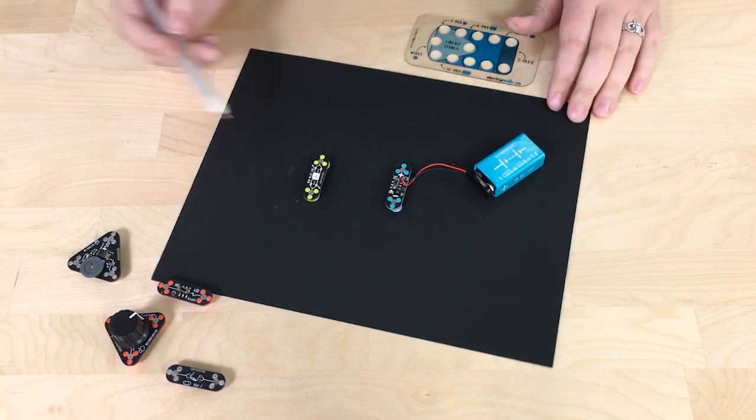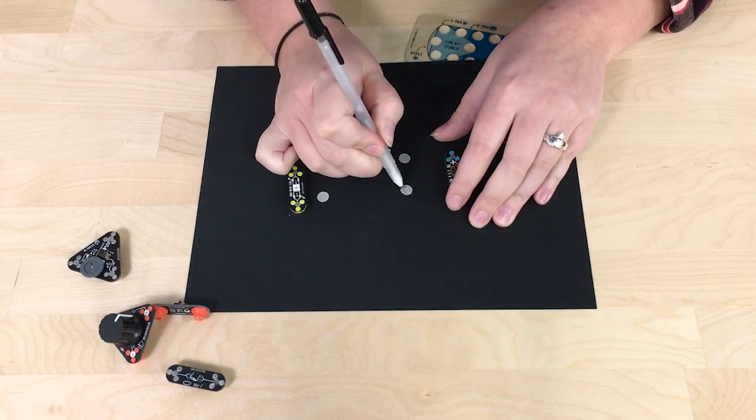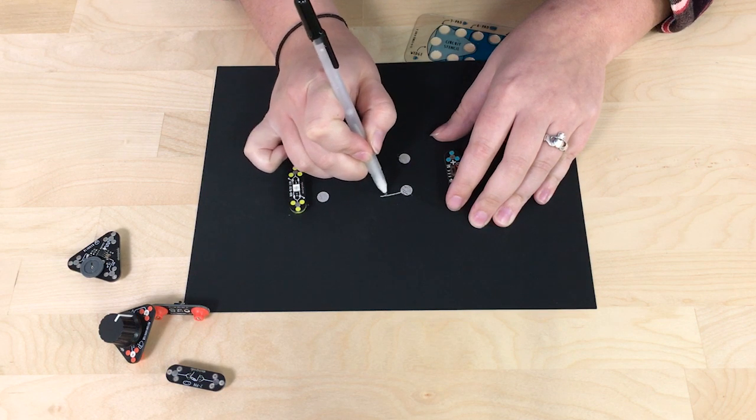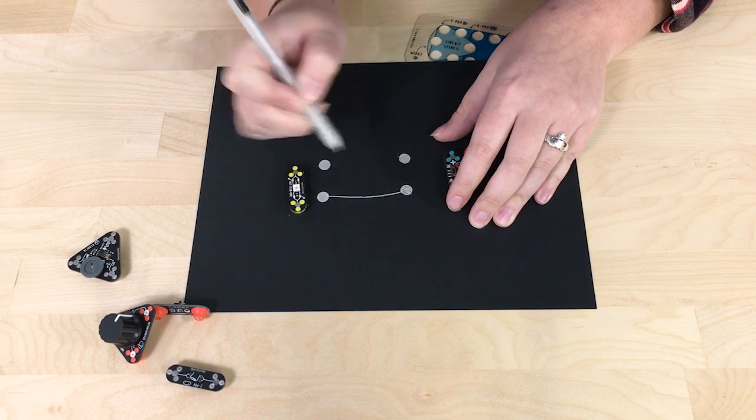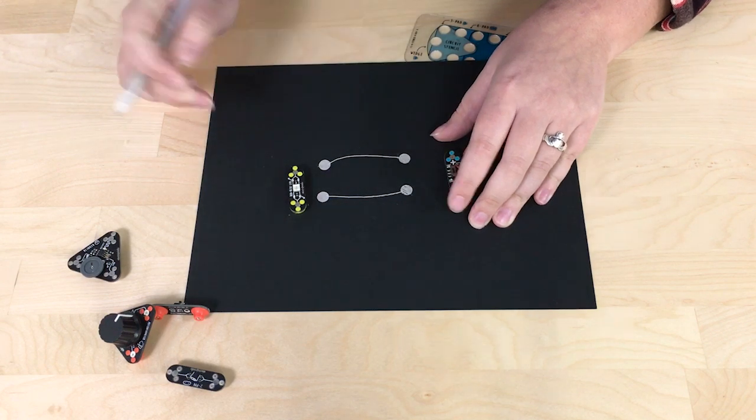Now in order to get current to flow I'm going to use my conductive ink pen to draw the circuit right between my dots where I would normally have wires. There we go.